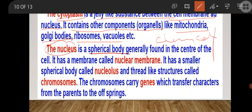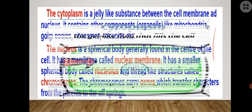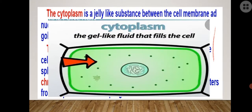The third part is the nucleus, which is a spherical body generally found in the center of the cell. The nucleus has three main structures: nuclear membrane, nucleolus, and chromosomes, which we will see in the next image.